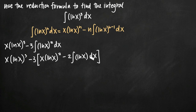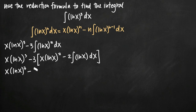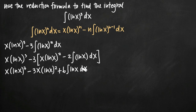We've now reduced the degree of our function from 2 down to 1. We had ln of x cubed, then ln of x squared, and now ln of x to the first power. We still have an integral, so let's simplify first — distributing the negative 3 across the two terms inside the brackets. We get x ln of x cubed, minus 3x times ln of x squared. Then negative 3 times negative 2 gives us positive 6 times the integral of ln of x dx. This is essentially ln of x to the first power, so we'll use our reduction formula again.